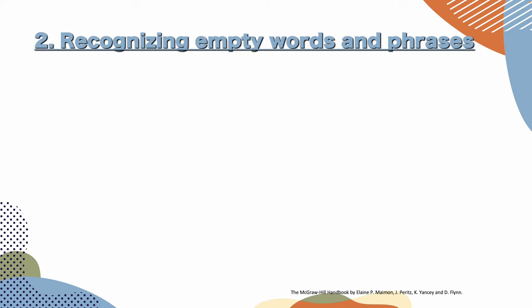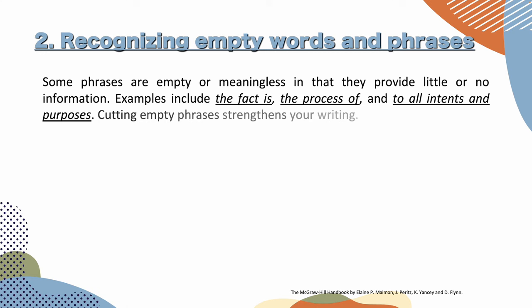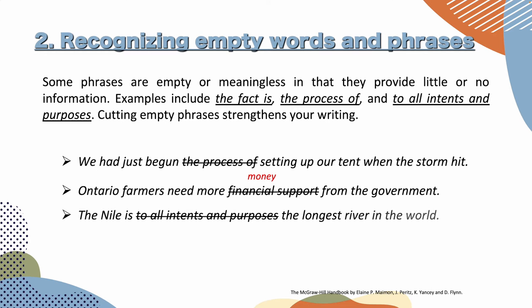The next one is recognizing empty words and phrases. Some phrases are empty or meaningless in that they provide little or no information. Examples include 'the fact is,' 'the process of,' and 'to all intents and purposes.' Cutting empty phrases strengthens your writing. For example: 'We had just begun the process of setting up our tent when the storm hit' — we don't need 'the process of.' Also, 'Ontario farmers need more financial support from the government' — 'financial support' can simply be replaced by 'money.' We don't need to write two words when we have one word for that.